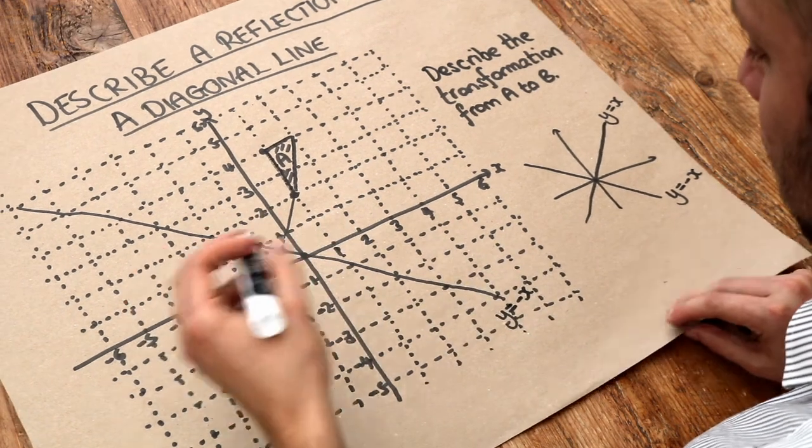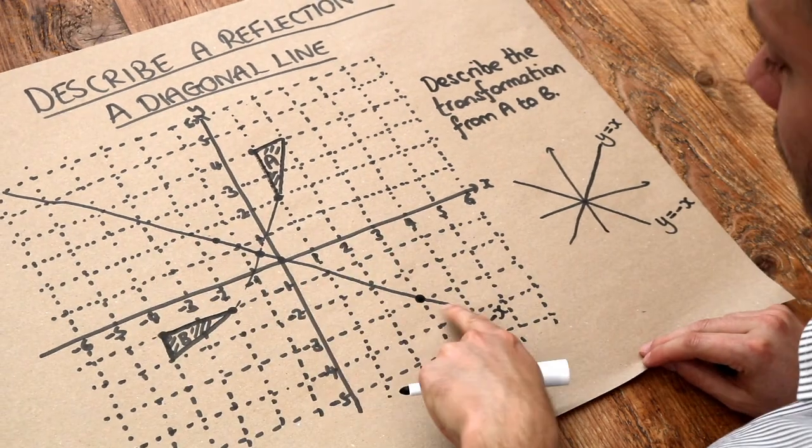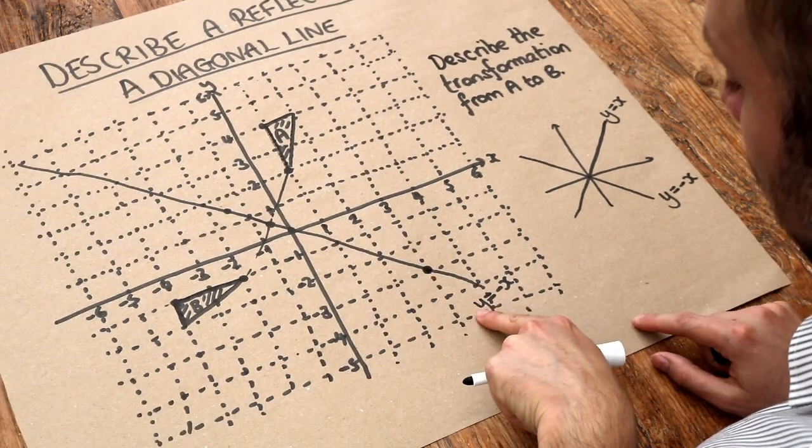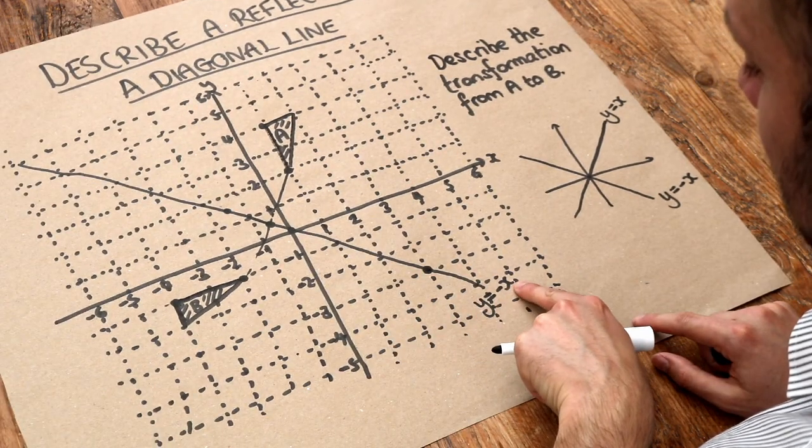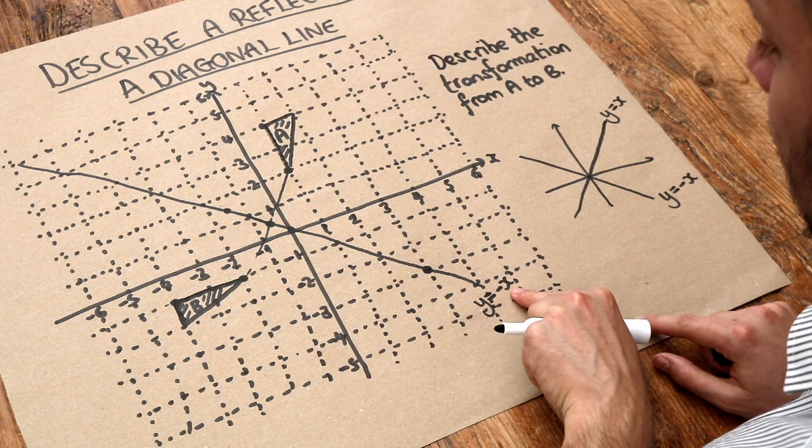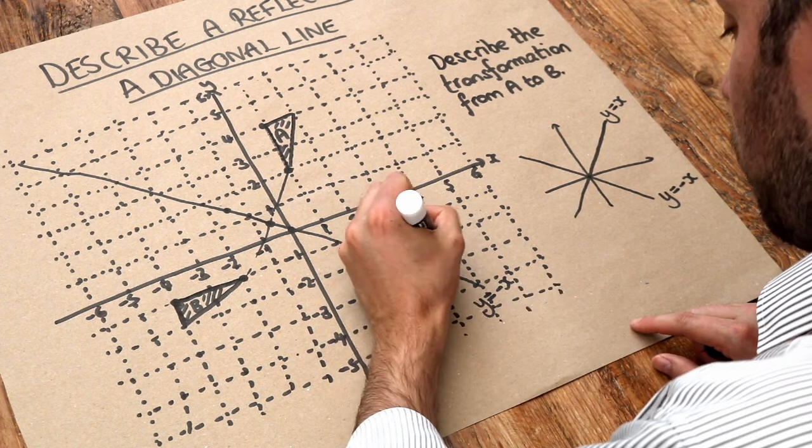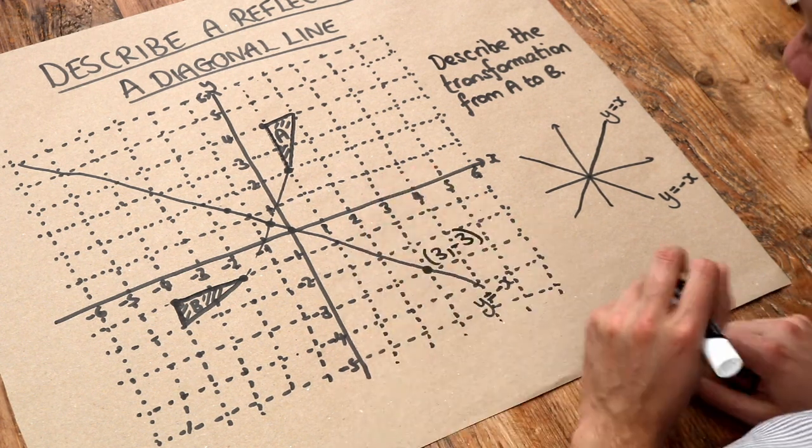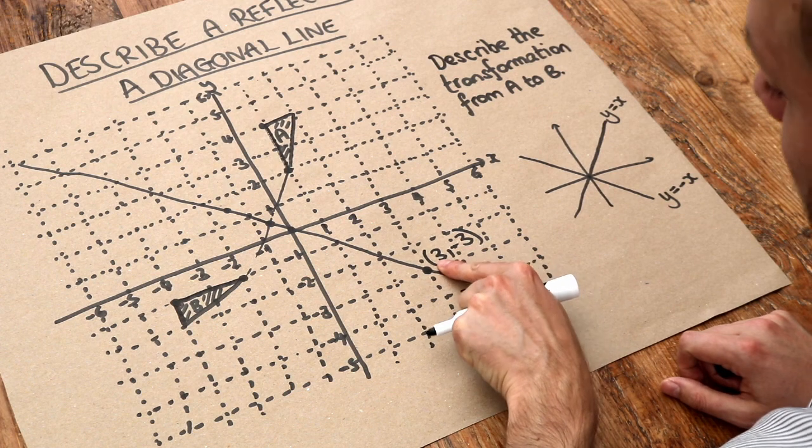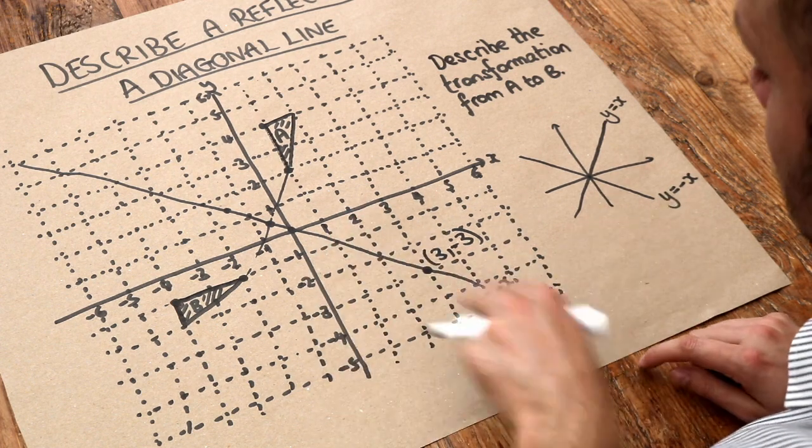And the reason is because if I was to pick any point on this line of reflection, it's saying that the Y value is the negative of the X value. Y is minus whatever X is. And indeed, if we look at the coordinate, that's 3 minus 3, we can see the Y value is negative of whatever the X value is. So that does work.